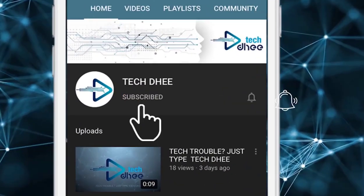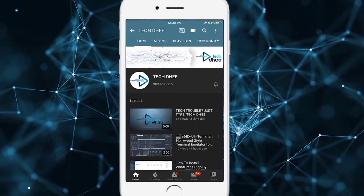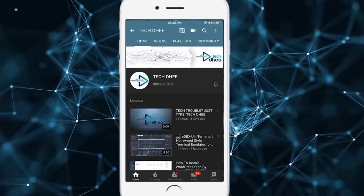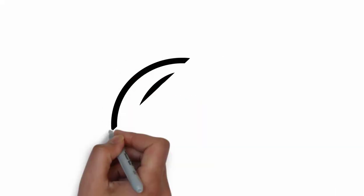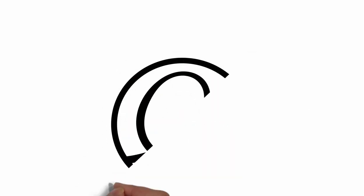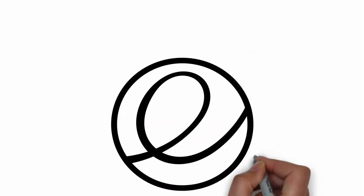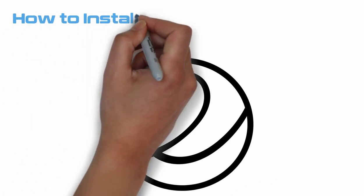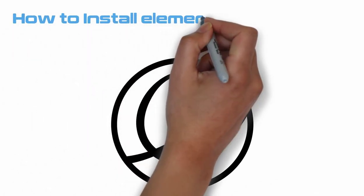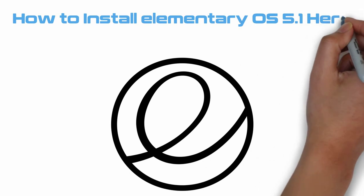Hit the subscribe button and click on the bell icon for getting new updates. Welcome to my YouTube channel. In this video I'll show you how to install Elementary OS, so let's start.